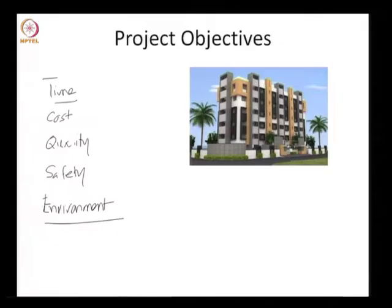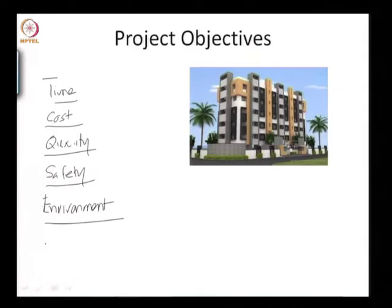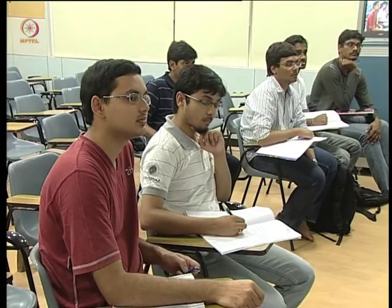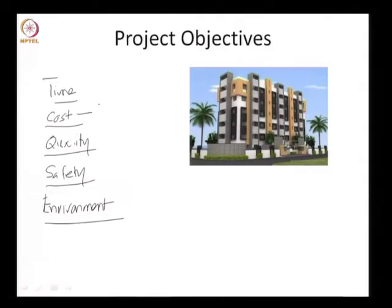Typically these are the objectives of a project, though there might be other objectives — for example, good team building, project-specific objectives, or if it is a social cause, social upliftment. The next issue we want to discuss is: what do you think is the priority today among these objectives? Cost and time — but can we compromise on quality?